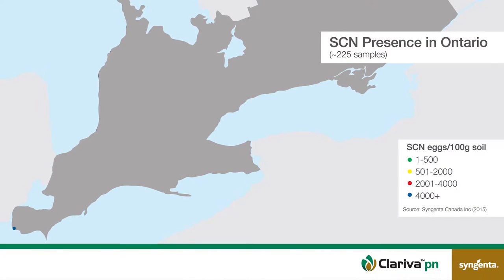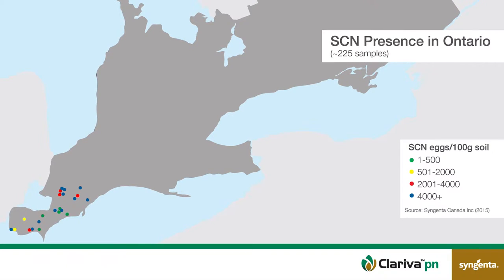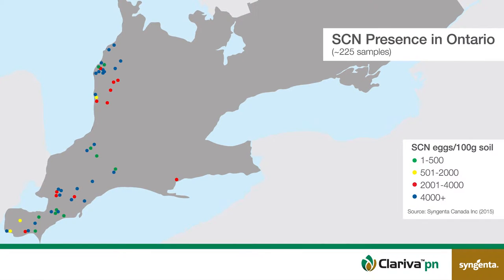Soybean cyst nematode was first introduced or found in the US in the 1950s and it spread up into Ontario in about 1988. Since then it's been moving north and we're seeing a lot of soybean cyst nematode up along Lake Huron and in other parts of Ontario as well. Even into Eastern Ontario and into Quebec we're starting to find soybean cyst nematode.